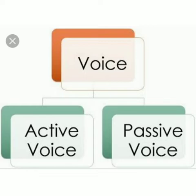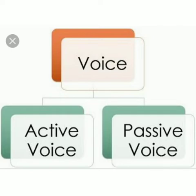Now let's see what is passive voice. A verb is in passive voice when the sentence shows that something is done to the person or the thing denoted by the subject. For example, the active sentence 'The hunter shoots the tiger' becomes 'The tiger was shot by the hunter' in passive voice. What happened to the tiger? The tiger was shot by the hunter — that is the passive voice.